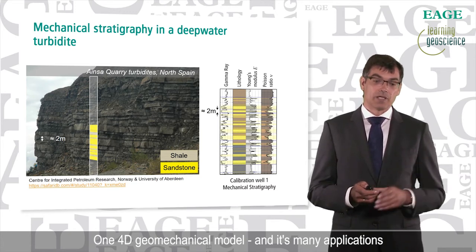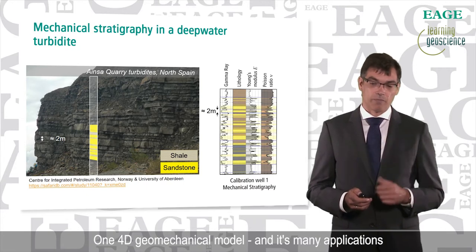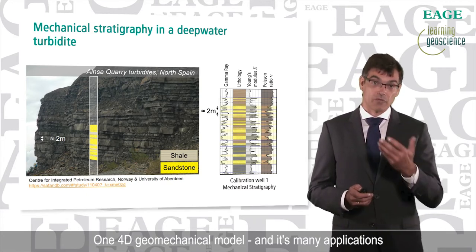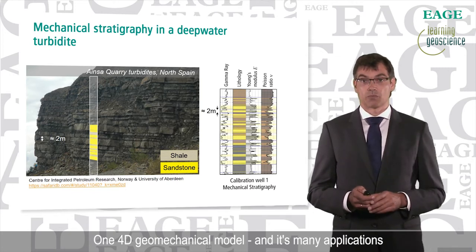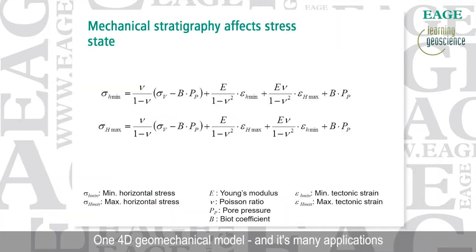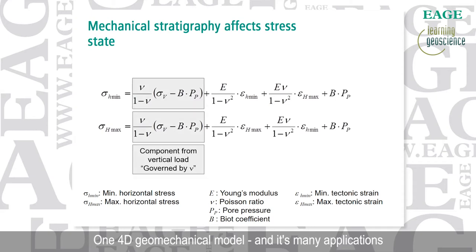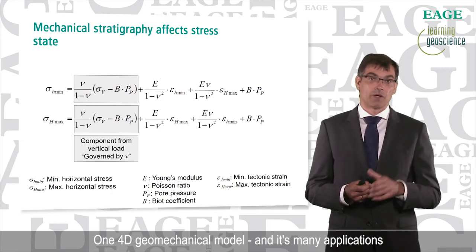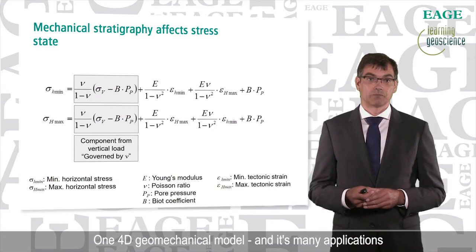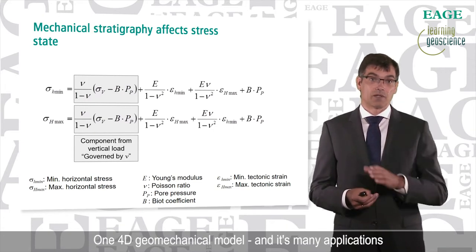The next thing we need in the geomechanical model is also the stress state. We need all three properties: mechanical properties, pore pressure, and the stress state. I'm a physicist by training, so I couldn't resist bringing an equation. Here you see ν for Poisson's ratio, σ_v for vertical stress, and p_p for pore pressure. Vertical stress is determined by integrating the density over depth to get the weight of the overburden. You multiply that by the ν/(1−ν) term, which contributes to horizontal stress — that is the first part contributing to horizontal stresses.